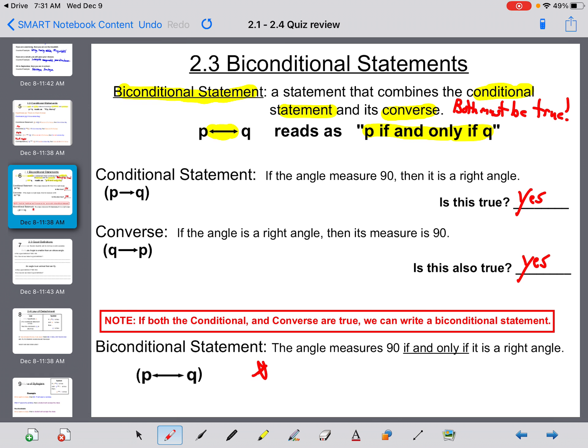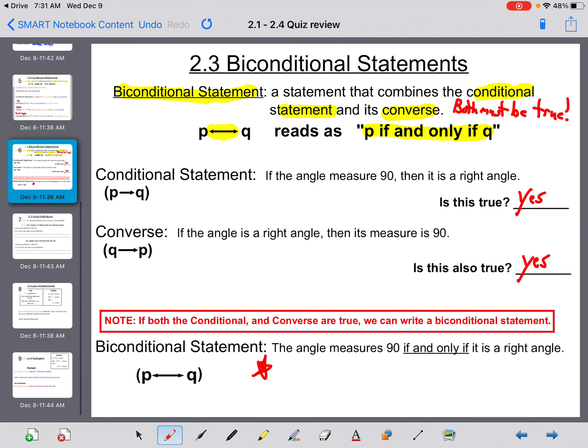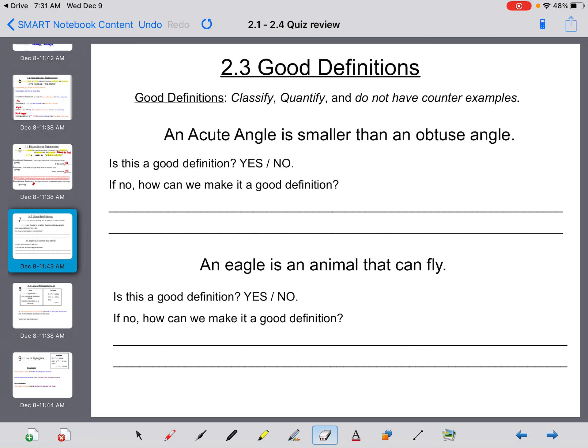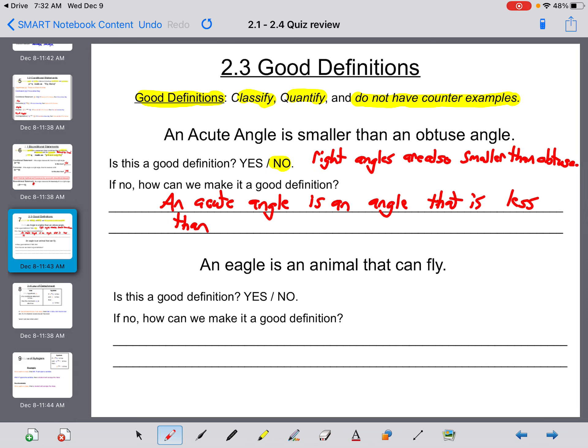Your biconditional statement is: the angle measures 90 if and only if it is a right angle. You're going to need to write biconditional statements on your quiz. Good definitions. We talked about this. Definitions that are good, they classify, they quantify, and they do not have counter-examples. An acute angle is smaller than an obtuse angle. Now, that may be true, but is it a good definition? The answer is no, because right angles are also smaller than obtuse. So how can we make this a good definition? An acute angle is an angle that is less than 90 degrees.